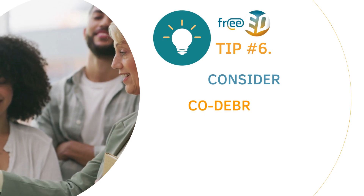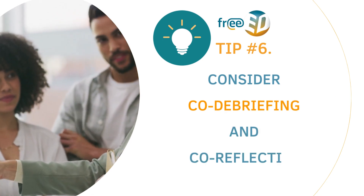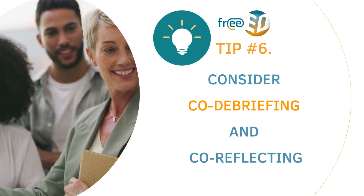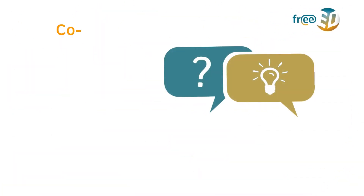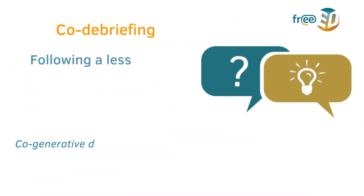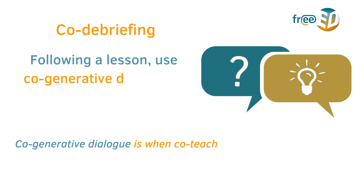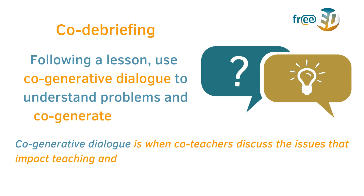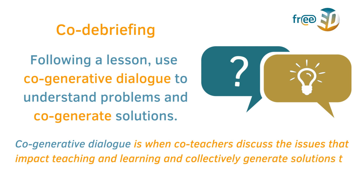Tip number six: consider co-debriefing and co-reflecting. It's the last tip, but it's also highly important. Co-debriefing helps teachers build trust, grow professionally, and become more aware of themselves and one another through constructive critical analysis of teaching. As soon as possible following a lesson, use co-generative dialogue to understand problems and co-generate solutions. Co-generative dialogue is when co-teachers discuss the issues that impact teaching and learning and collectively generate solutions to any problems.